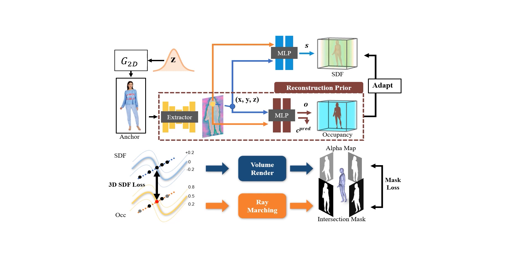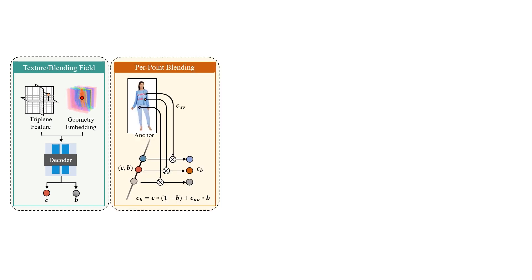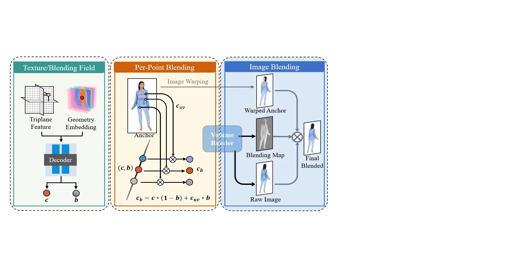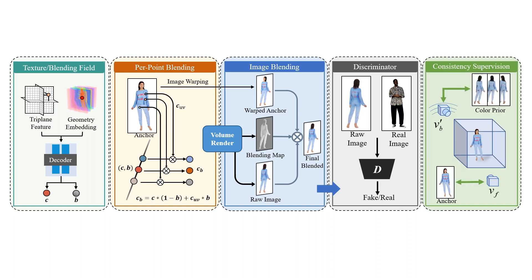For the appearance branch, we propose to learn an appearance field and a blending field from both pixel-aligned and triplane features. We then adopt a two-stage blending scheme to make full use of the rich texture information in the anchor image. For training, we adopt a strategy similar to EG3D with pose conditioning, and introduce additional front-view and back-view consistency supervision to enhance generated texture details.